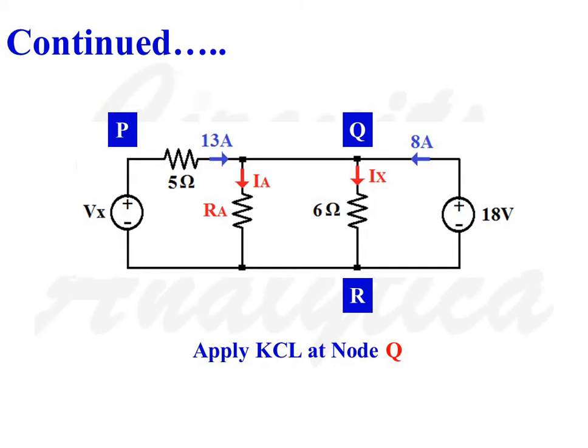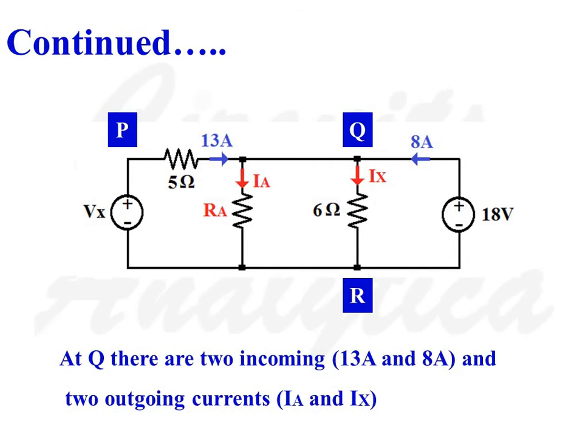Apply KCL at node Q. Currents associated with node Q are 13A and 8A incoming currents, and two outgoing currents IA and IX.